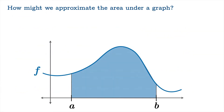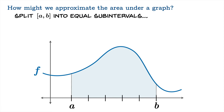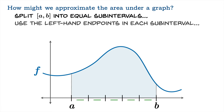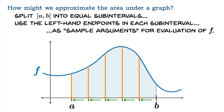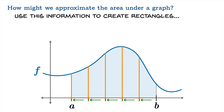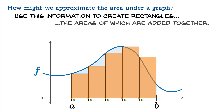So how might we approximate the area under a graph? Here we have a region that lies below the graph of f, above the horizontal axis and between the arguments a and b, and we want to know what the area is. One possibility is we could split this interval from a to b into equal sub-intervals, then use the left-hand endpoints in each sub-interval to sample the function value at each of those arguments. Using those values as heights, we can create rectangles — taking the width times the height and adding that all up gives us a number we'll call the left-hand sum.